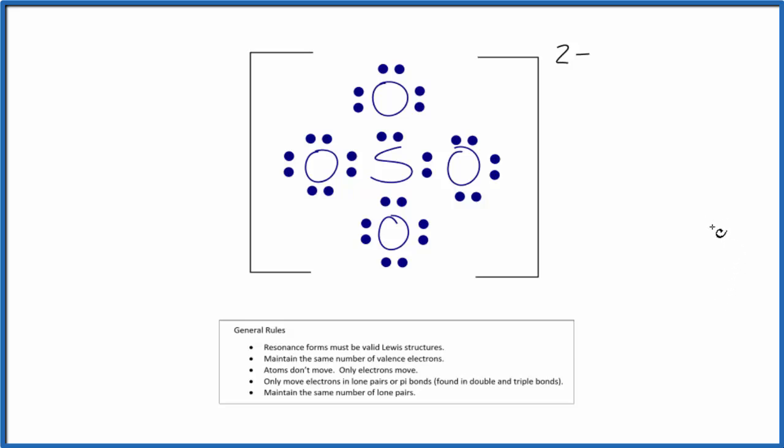If you drew the Lewis structure for SO4²⁻, you'd probably come up with something like this first. And this is a valid Lewis structure. We have octets on each of the atoms, and we've used all the valence electrons for the SO4²⁻ ion.